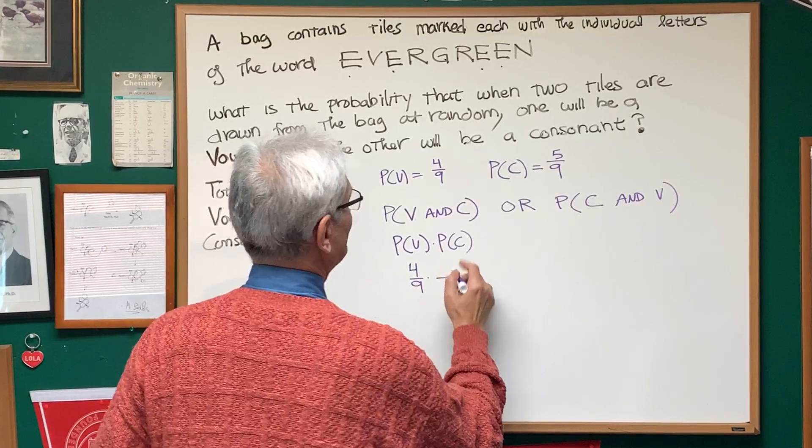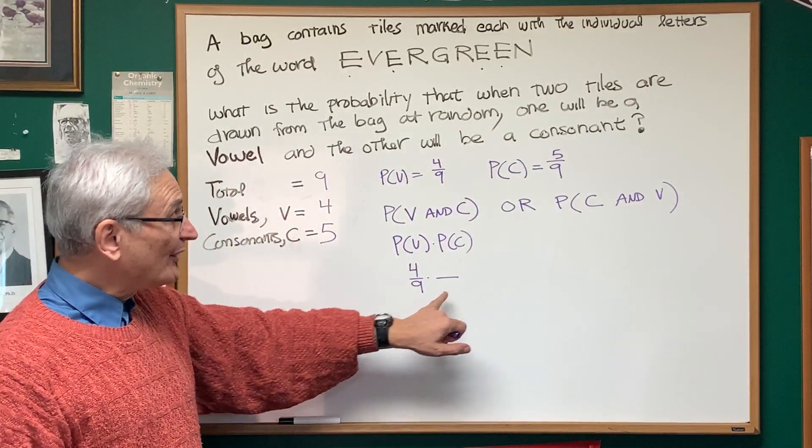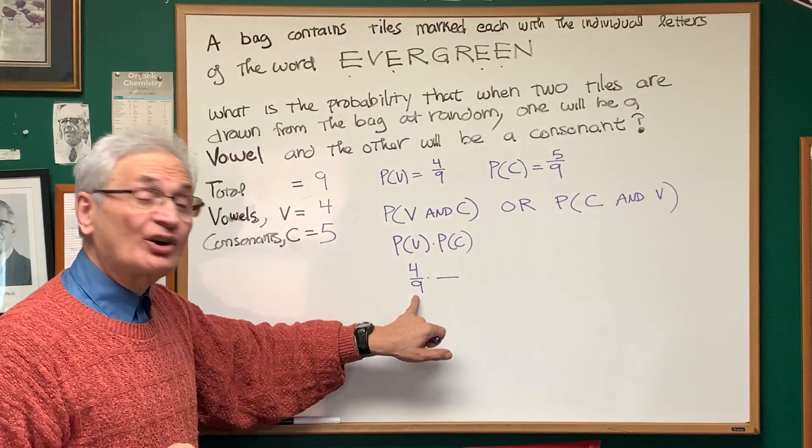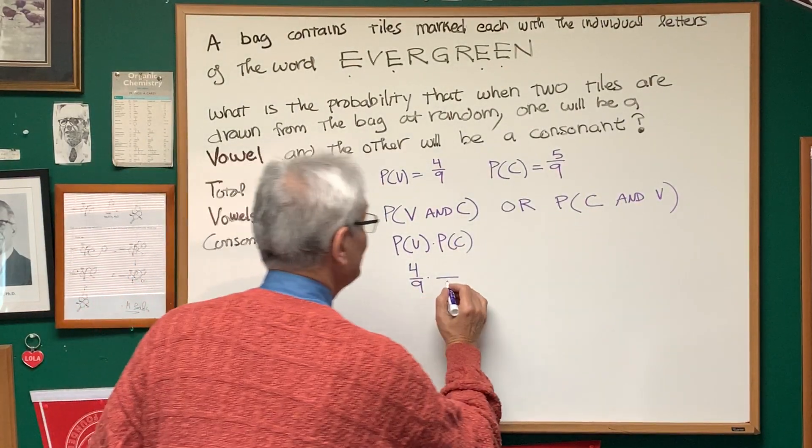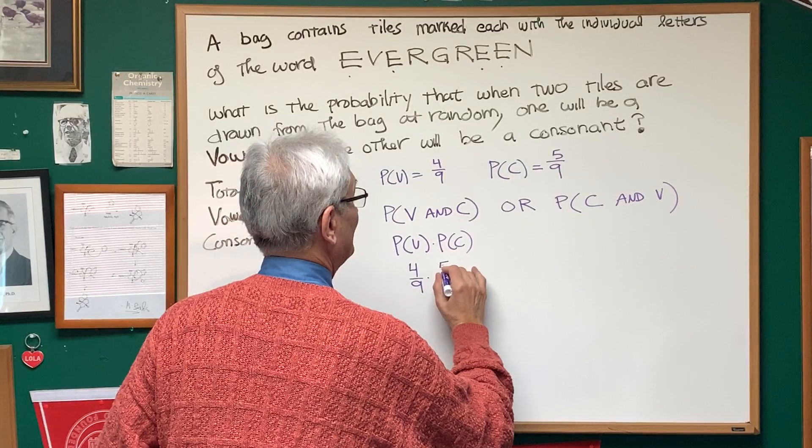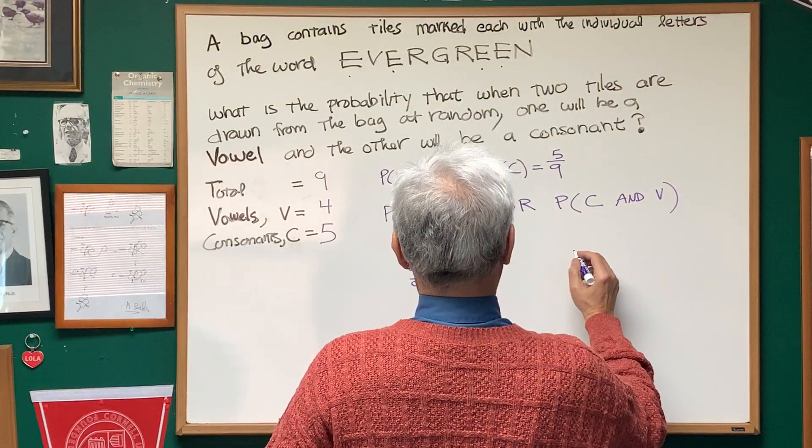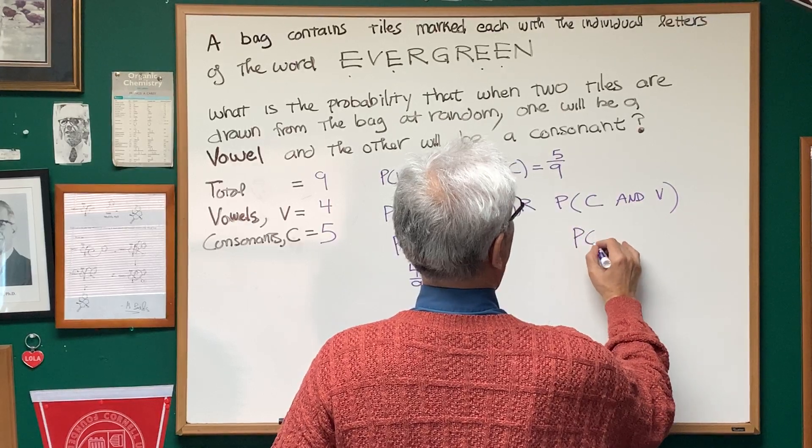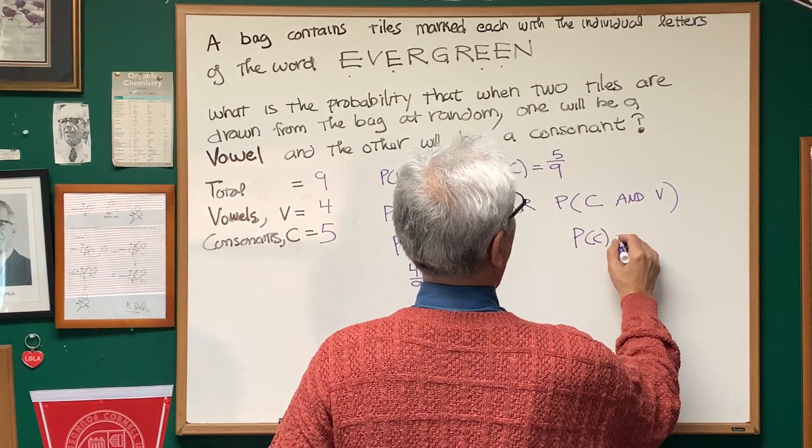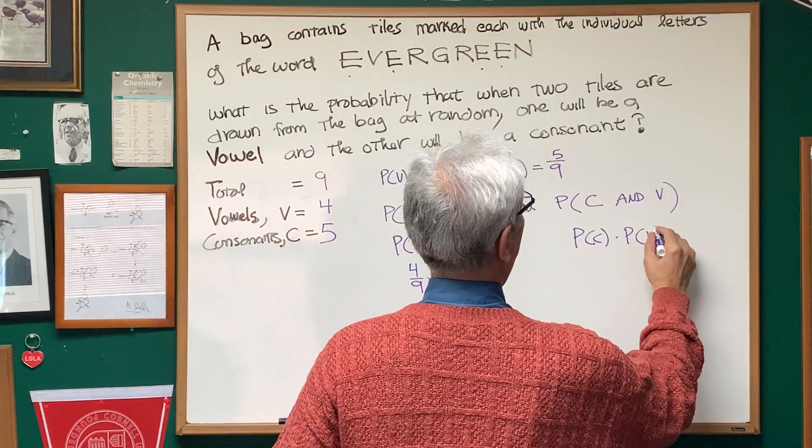What's the probability of choosing a consonant? Well, now that I've chosen one tile out of the bag, there are no longer nine tiles in the bag. There's only eight tiles, but still five consonants. Okay, or I have this probability of choosing a consonant first and then a vowel.